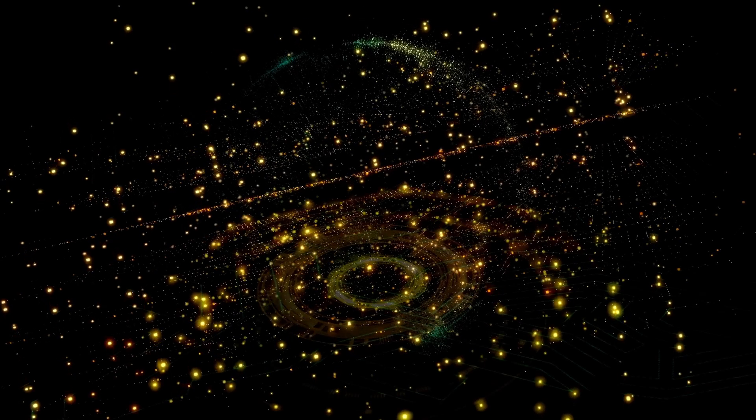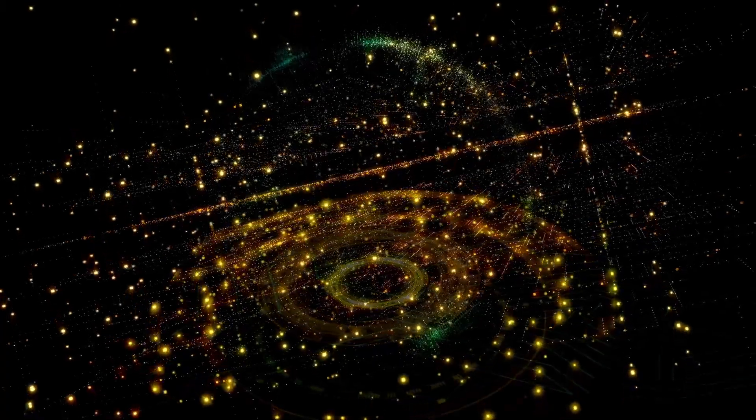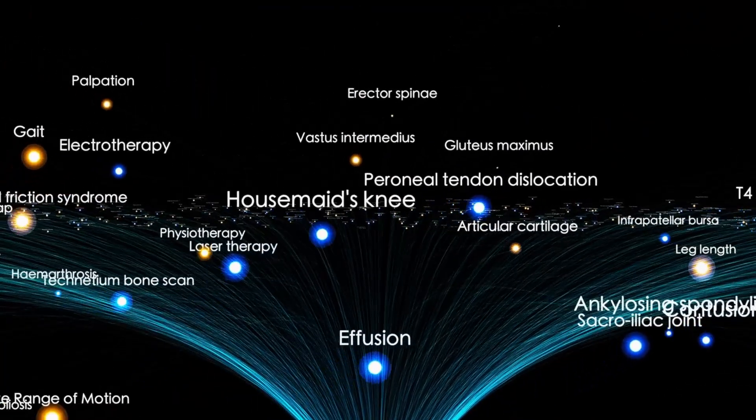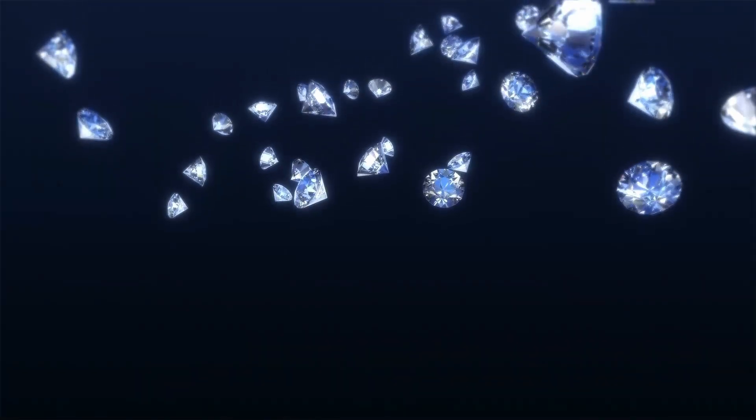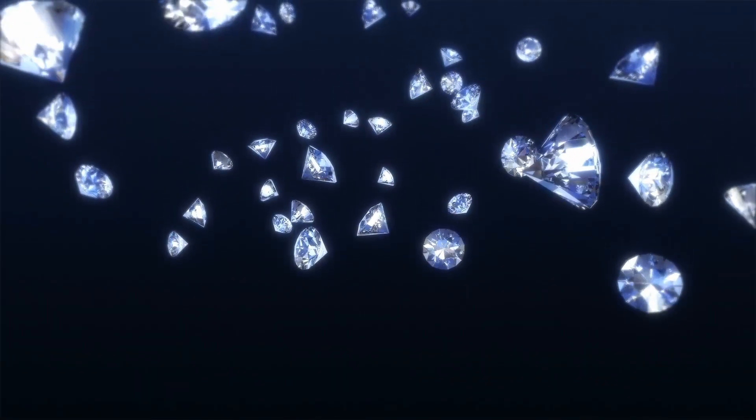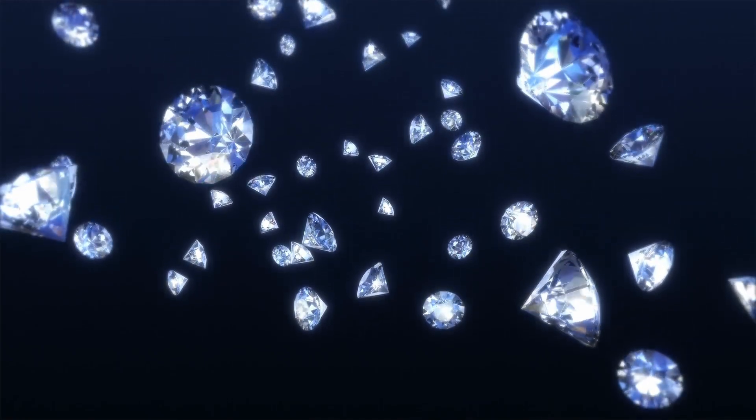Let's return to Proxima b, the exoplanet that has captivated astronomers since its discovery in 2016. This planet is not only one of the closest known exoplanets, just over 4.2 light-years from Earth, but it also possesses qualities that spark genuine scientific intrigue.